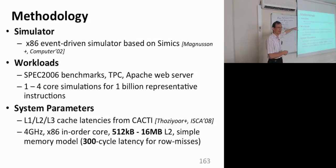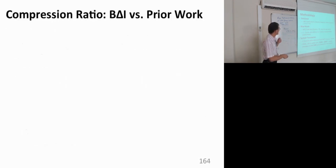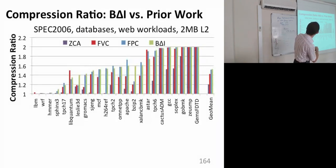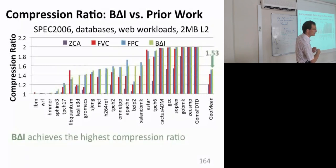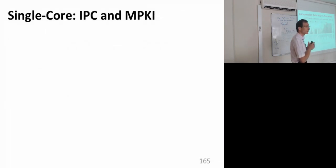For evaluation, we used an event-driven simulator based on SIMICS, generating traces and evaluating the mechanism. The compression ratio comparison shows zero-based compression at about 1.2. Frequent value compression is lower than frequent pattern compression. Base-Delta-Immediate compression ratio is a little bit higher than frequent pattern compression but comes at lower complexity. The compression ratio is 1.53, meaning a 1-megabyte cache looks like a 1.53-megabyte cache.